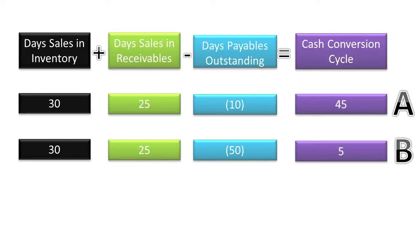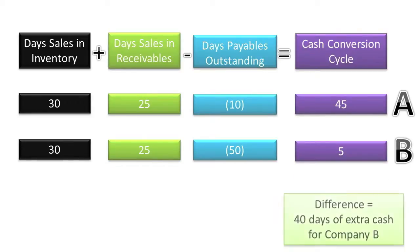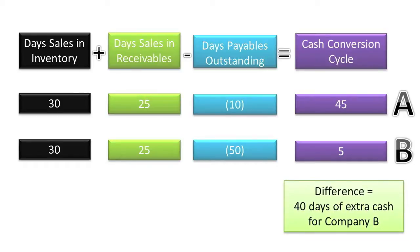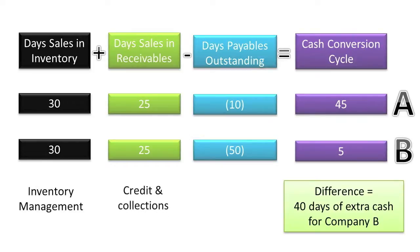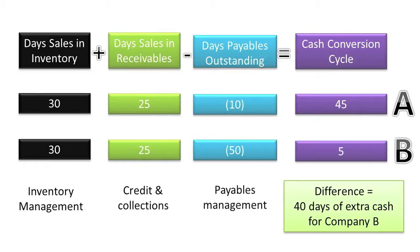Based on the above, Company B's shorter Cash Conversion Cycle provides it 40 more days' worth of cash than Company A. Some companies are very good at minimizing their Cash Conversion Cycles by having great inventory management, great credit granting and collecting, and great supplier relationships, which allow them to significantly delay their payments on accounts payable.